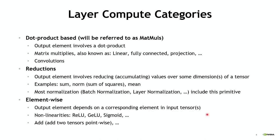Looking at the compute characteristics of various layers, I divide them into three rough categories. First, layers where computing an output element requires computing a dot product. Traditionally those will be matrix multiplies — in machine learning sometimes called fully connected layers, linear layers, or projection matrices. Convolutions also fall into this category because they are just sets of dot products that can be formulated to the hardware to look like matrix multiplies.